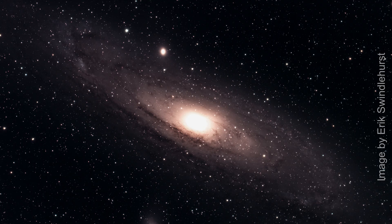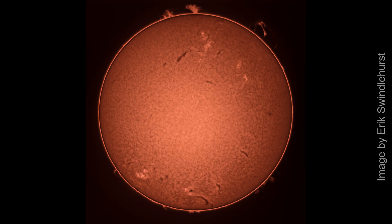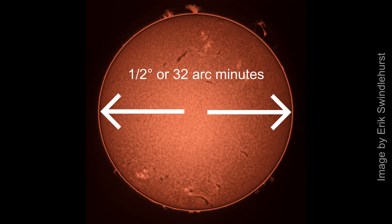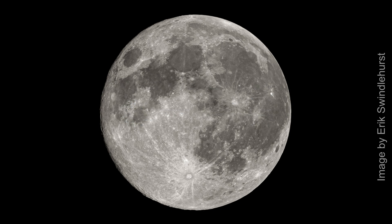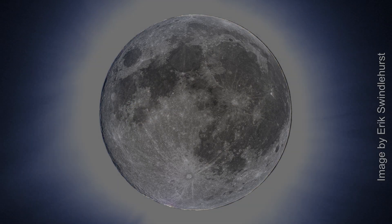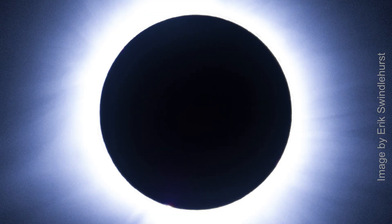For example, the sun is approximately one half degree apparent width, or 32 arc minutes. The moon has an apparent width of 29.4 to 33.5 arc minutes depending on its orbit, similar to about half a degree wide. And as we recently witnessed across North America, the moon was at the right spot in its orbit to give us a total eclipse of the sun on April 8th, 2024.